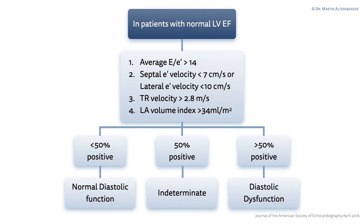If only one is positive and three are negative — so for example, the average E to E' velocity is 16, but the lateral E' velocity is 11, the TR velocity is 2.6, and the LA volume index is 30 milliliters per square meter — you have normal diastolic function. And if two are positive and two are negative, it is indeterminate.